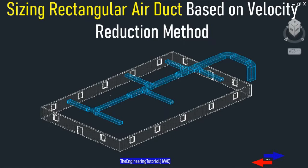The velocity reduction method can be used for sizing air ducts. By using this method you can select suitable velocities for sizing ductwork. When sizing air duct, the velocities will remain constant for the entire system, and it will result in a lower friction loss value and larger duct size compared to the equal friction method.